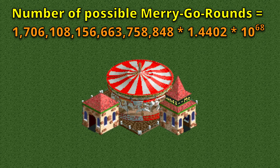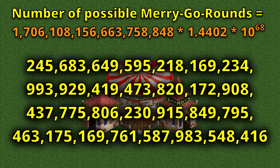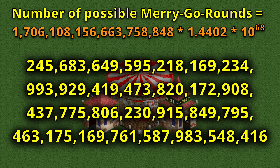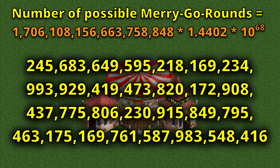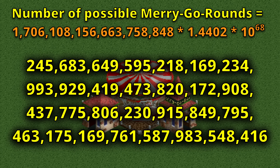Multiplying this with the 1.7 quintillion we already had, we get our final answer: 245 septem-vigintillion, 683 sex-vigintillion, 649 quintillion, 595 quatuor-vigintillion, 218 tres-vigintillion, 169 duo-vigintillion, 234 un-vigintillion, 993 vigintillion, 929 noven-decillion, 419 octodecillion, 473 septem-decillion, 820 se-decillion, 172 quindecillion, 908 quatuor-decillion, 437 tre-decillion, 775 duo-decillion, 806 un-decillion, 230 decillion, 915 nonillion, 849 octillion, 795 septillion, 463 sextillion, 175 quintillion, 169 quadrillion, 761 trillion, 587 billion, 983 million, 548 thousand and 416 different possible combinations for one single merry-go-round.